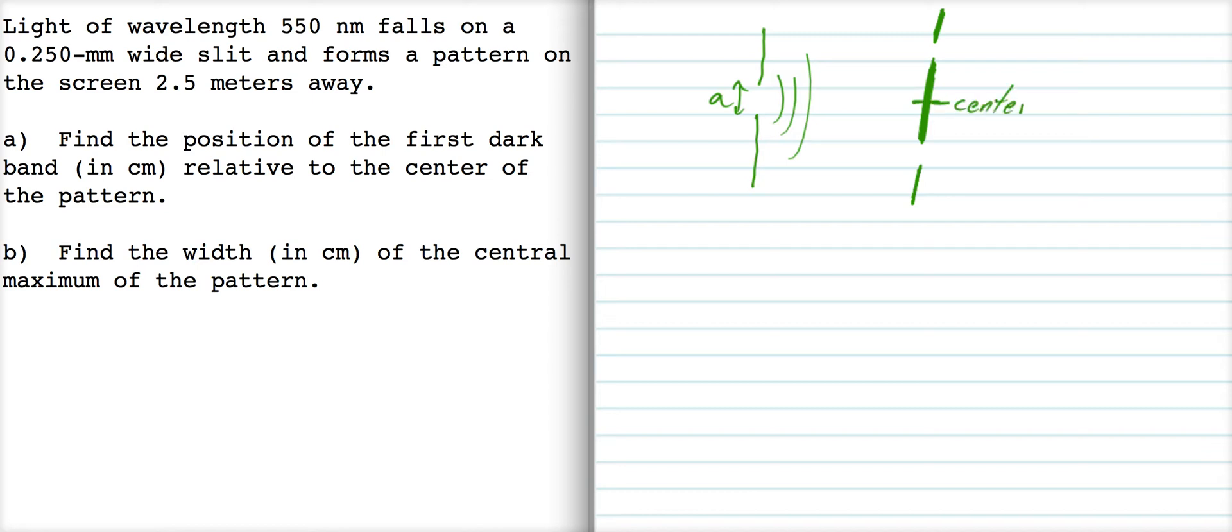Here's the center of the pattern, and here's the first minimum. That first minimum makes an angle theta here, which is y over L. So our formula for single slit interference, the location of the first minimum is A sine theta equals lambda.